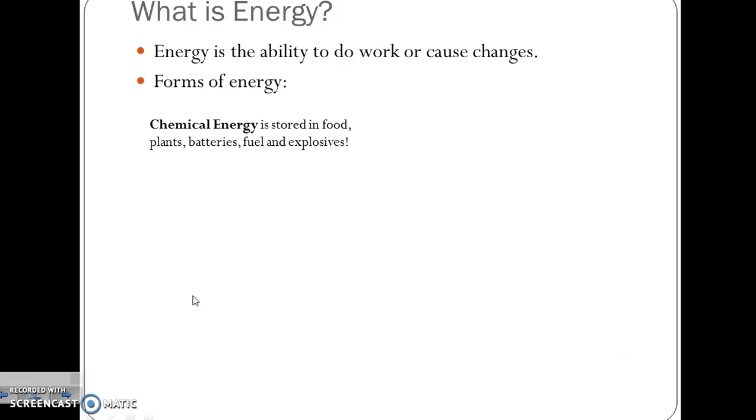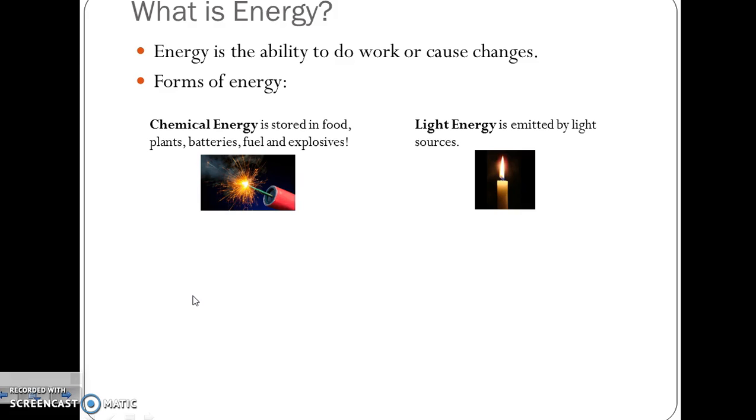Forms of energy. The first one: chemical energy is stored in food, plants, batteries, fuel, and explosives like this one. Light energy is emitted by light sources, for example this candle.